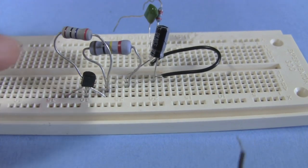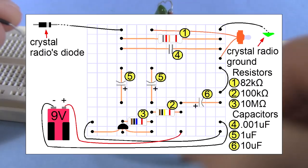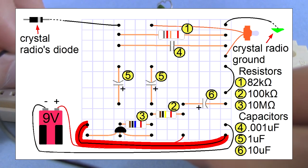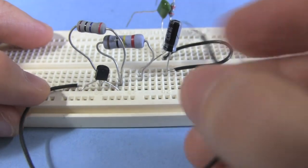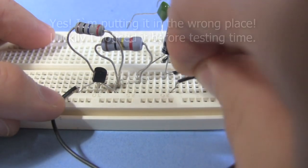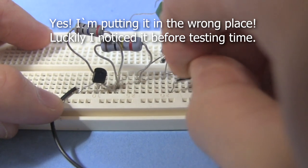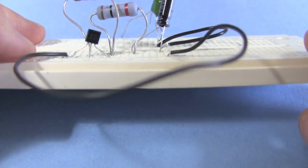Next we have to connect the emitter of the transistor to the ground roll. So I've just got a wire here. That end will go next to the emitter. And the other end will go in the ground roll. Like that.